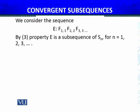We consider the sequence E: F1,1, F2,2, F3,3, ..., which is the diagonal sequence. By property (3), E is a subsequence of Sn for n = 1, 2, 3, and so on.